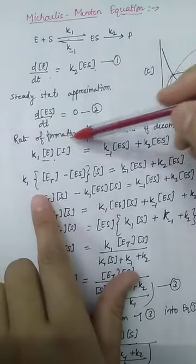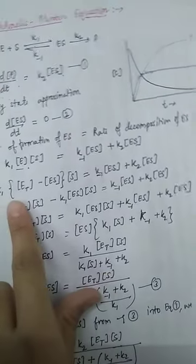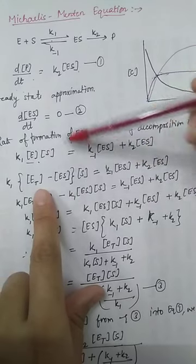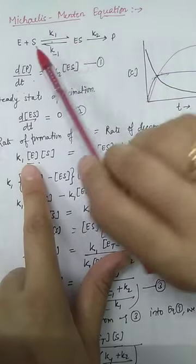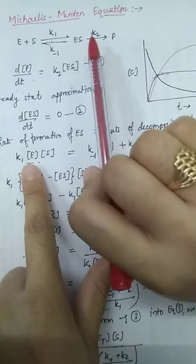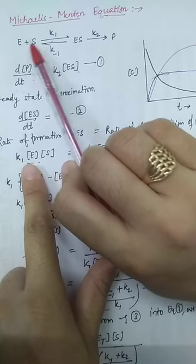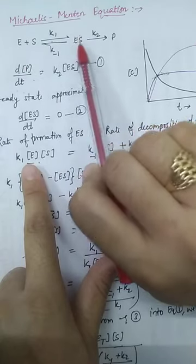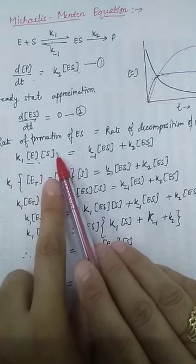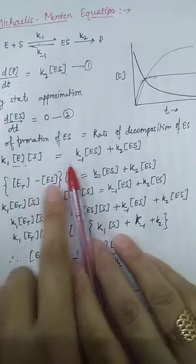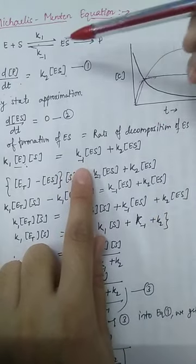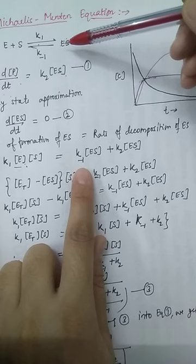The steady-state approximation states that the rate of change of concentration of the enzyme-substrate complex with time is equal to zero, or equivalently, the rate of formation of the enzyme-substrate complex equals the rate of its decomposition. The rate of formation occurs in the first forward step, where enzyme and substrate combine to give enzyme-substrate, so we write the rate as K1 times enzyme concentration times substrate concentration.